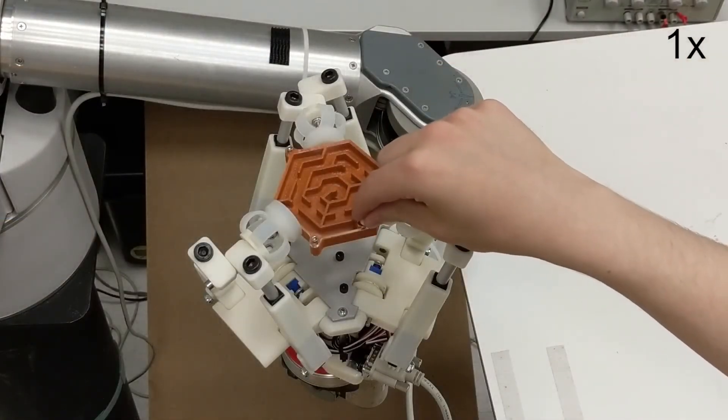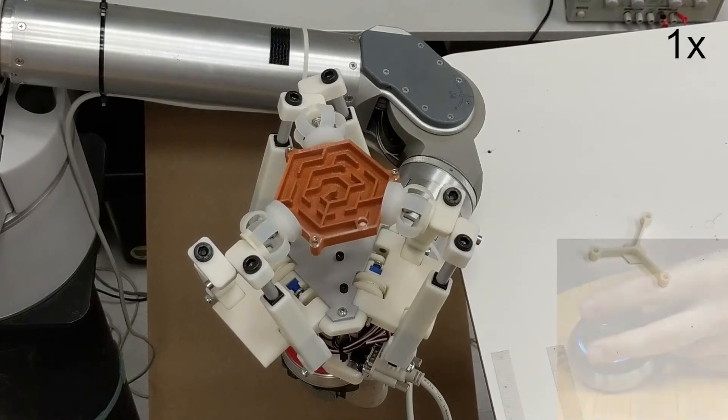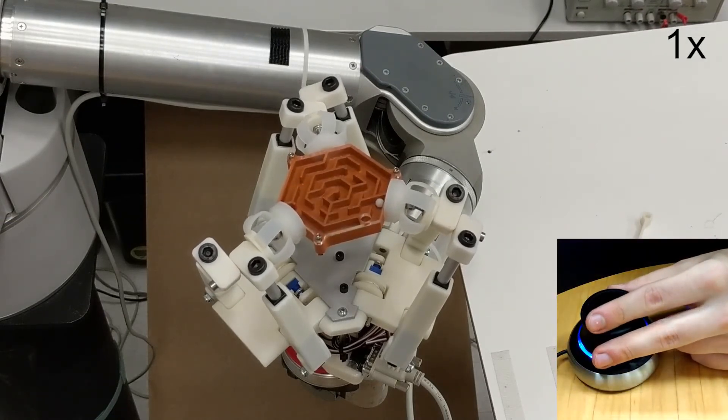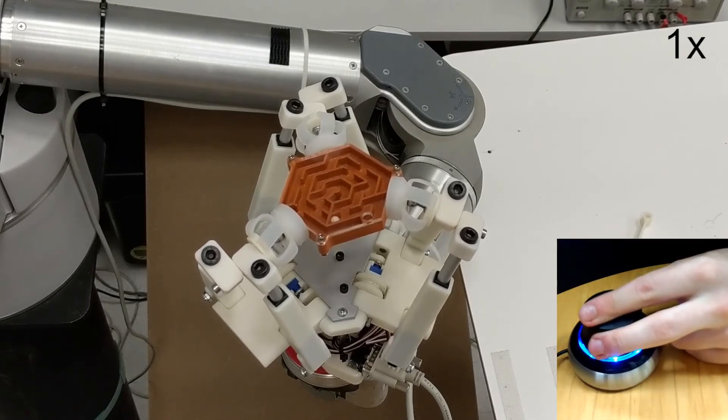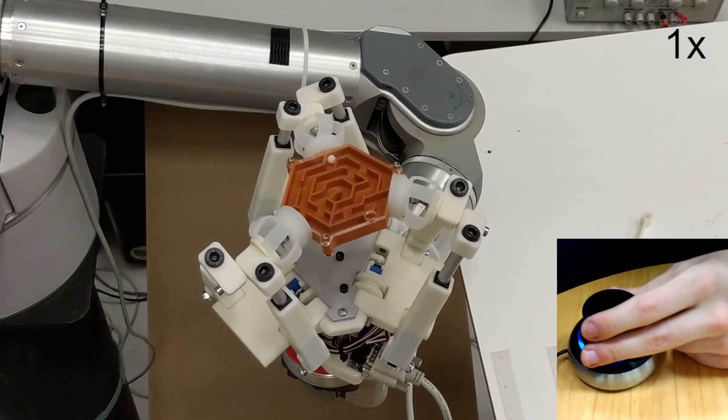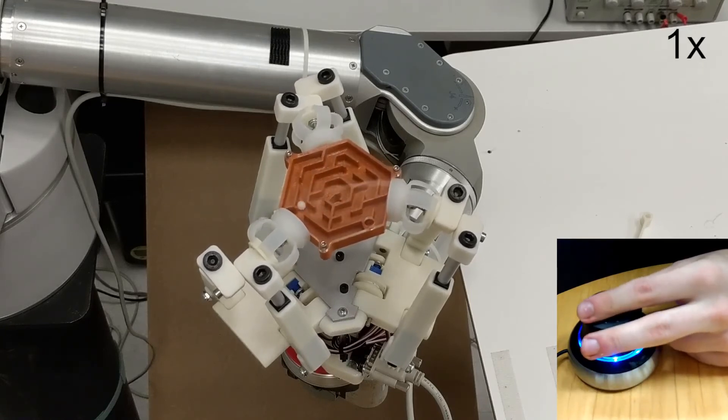The marble is then inserted and a 6DOF input device is used to control the hand's manipulation. Again, this task is accomplished completely open loop aside from the operator input and low-level motor control. As you can see, the operator is able to achieve the task with ease.